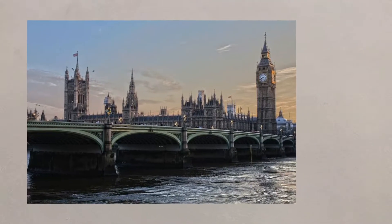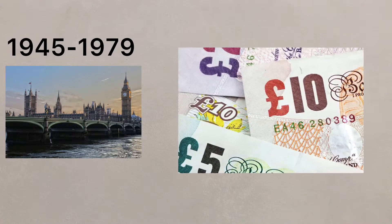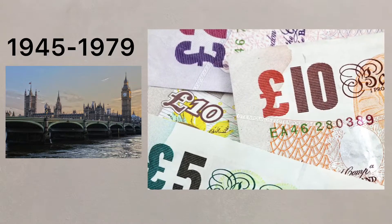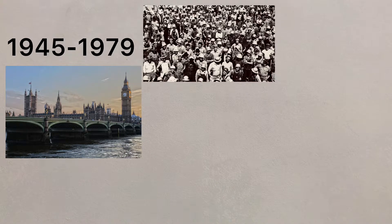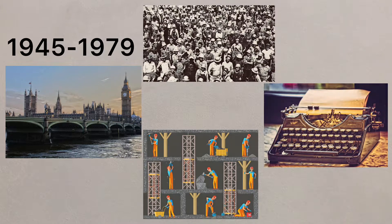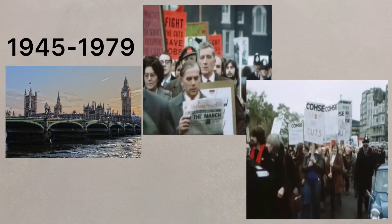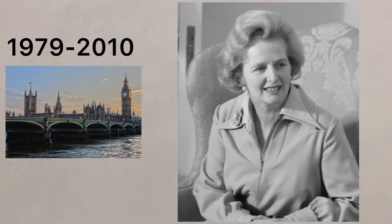Government policies have also contributed to changes in the UK economy. Between 1945 and 1979, a great deal of money was spent by the government in propping up many of the declining industries. Too many employees, old equipment and outdated working practices meant that many industries were unprofitable, with the 1970s being a decade of strikes, factory closures and power cuts.